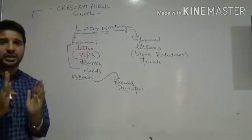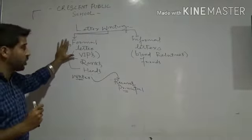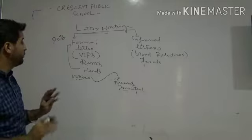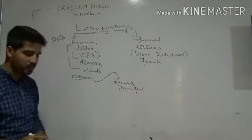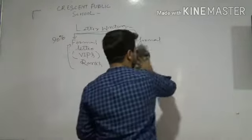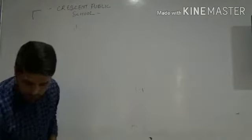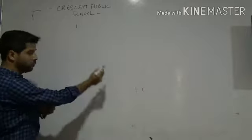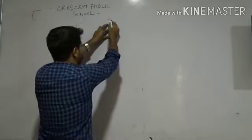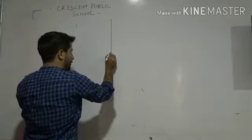That is why the paper setter is also more focused on formal letters. In 10th class, the probability is that 90% of the time you will get a formal letter. So I am taking the formal letter first. Now, when you are writing a formal letter, you should know the rules and structure. On one side of the board I will write rules, and on the other side I will show you the structure.